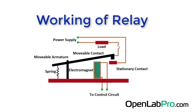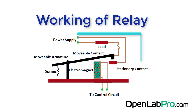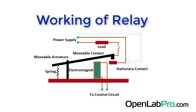We have to see the working of relay. The diagram shows the inner section of a relay, and you can see an iron core is surrounded by a control coil. When a power source is given to the electromagnet through a control switch to the load, then the current starts flowing through the control coil and the electromagnet starts energizing.